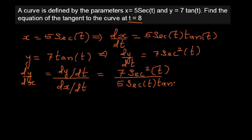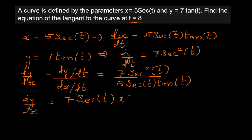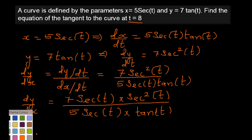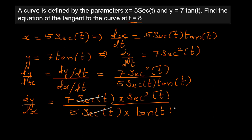Now we want to simplify this so it looks neater. We can write dy/dx = 7 sec²t over 5 sec t · tan t. Writing sec²t as sec t · sec t, one factor of sec t in the numerator cancels with sec t in the denominator. And 7 over 5 is 1.4.